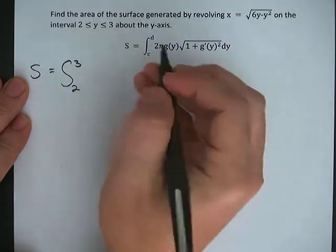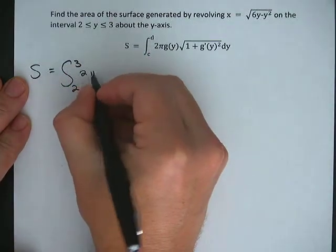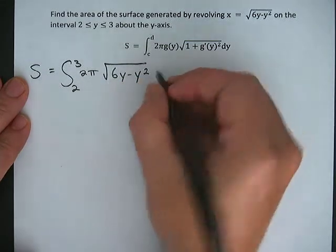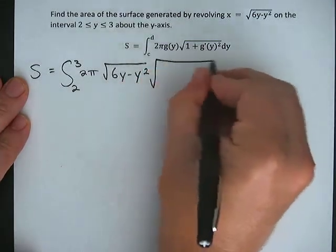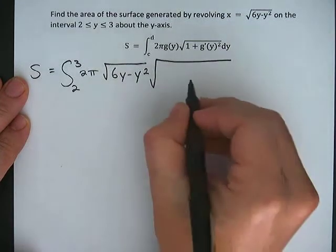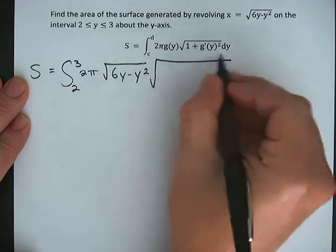So s is equal to the integral from 2 to 3. Those are our limits, 2 to 3, of 2 pi times the square root of 6y minus y squared times the square root. Okay, we did this because that was the function of y. Refer back to earlier in the video.